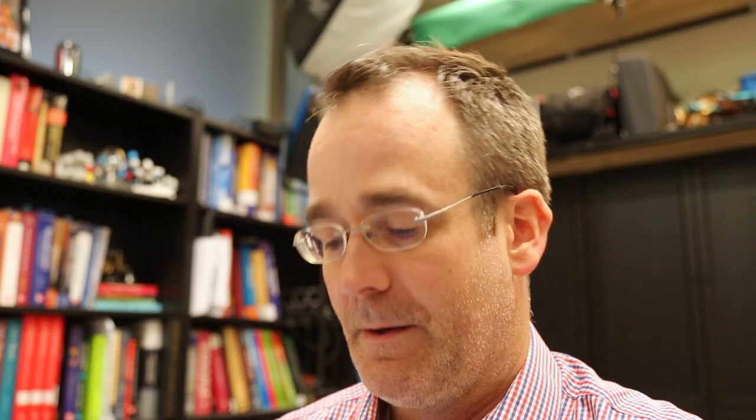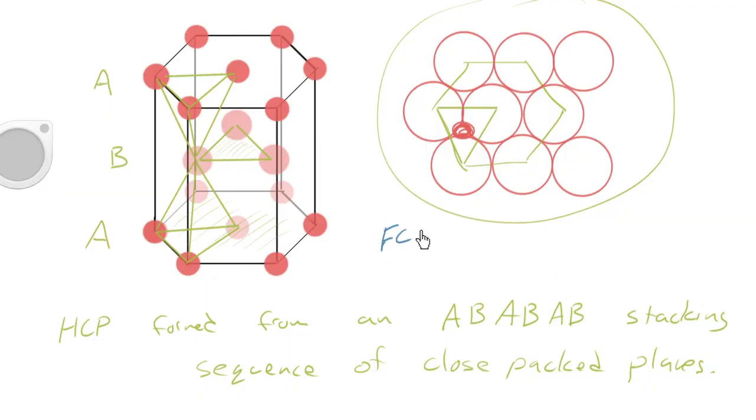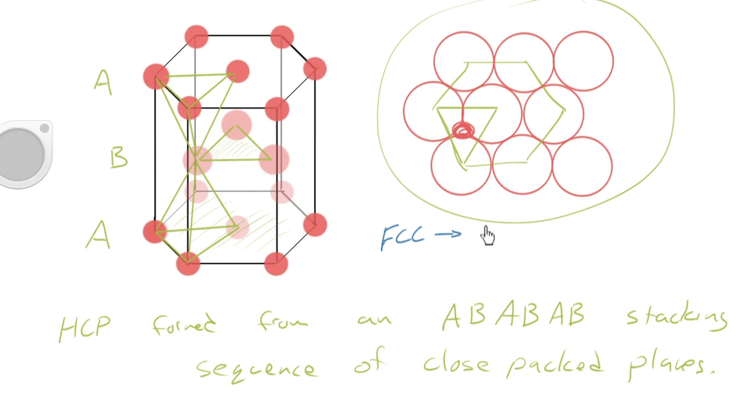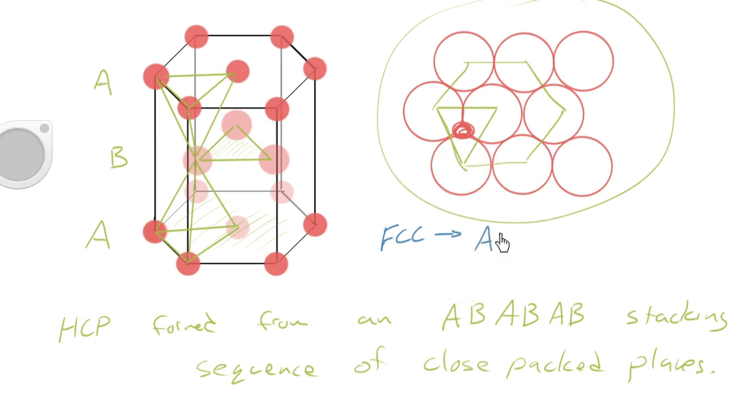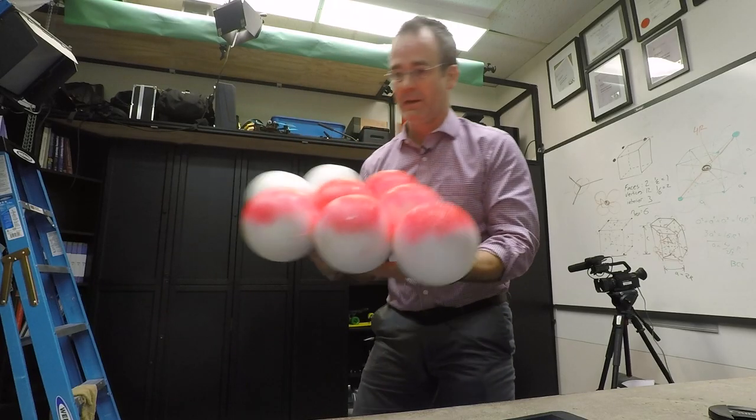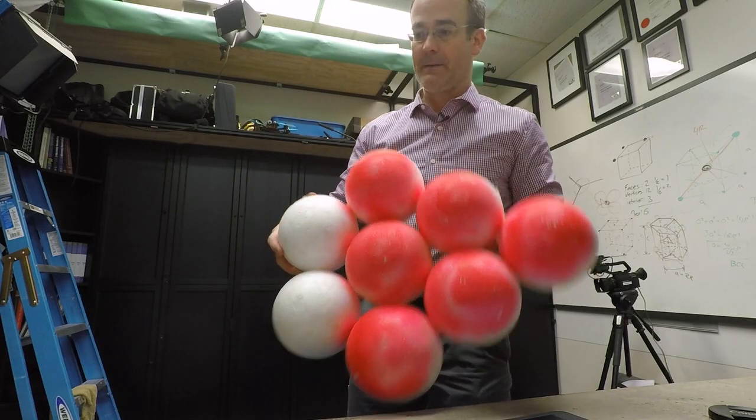Face-centered cubic, interestingly enough, is formed from... So face-centered cubic, on the other hand, is a so-called A, B, C, A, B, C stacking sequence. And that's a little difficult to sketch, but I could show you with these models really quickly here. This is a close-packed plane, right?